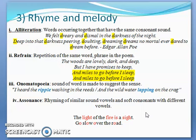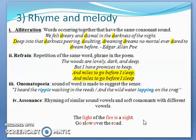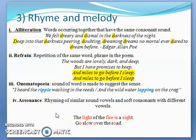Assonance is similar to alliteration but focuses on vowel sounds being repeated. Because vowels cannot stand alone, they appear with soft consonants. For example: 'The light of the fire is a sight' has a very pronounced repetition of the 'I' sound, and 'Go slow over the road' has a noticeable repetition of the 'O' sound. When a vowel sound is repeated in lines, that is assonance; when a consonant sound is repeated, that is alliteration.